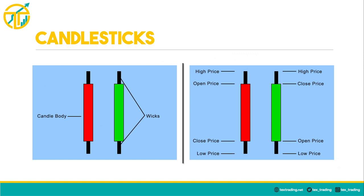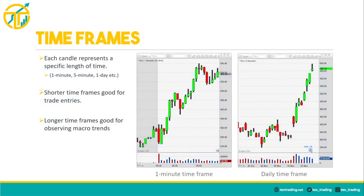The main components of a candlestick are the body and wicks, sometimes called shadows. Each candle has four price points: the open, high, low, and closing price. If a candle closes at a lower price than it opened, it's displayed as a red candle and perceived as bearish; if it closes at a higher price, it's displayed as a green candle and perceived as bullish. The wicks signify the highest and lowest prices of the candle. Each candle represents a specific time interval — the left chart is a one-minute time frame, the right is a daily time frame.